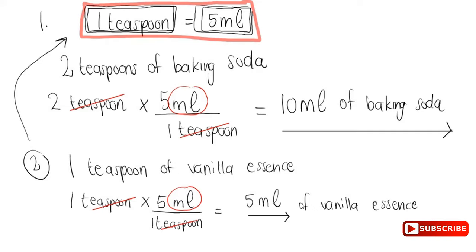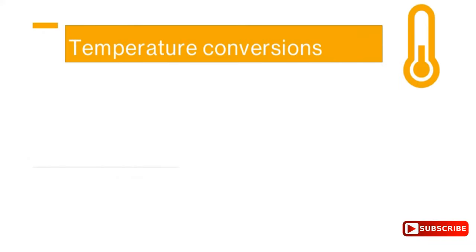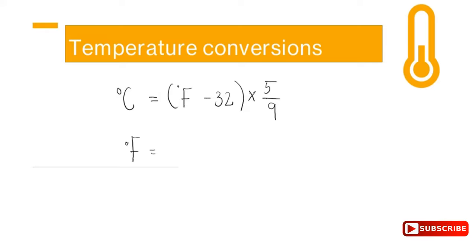Finally, let's look at temperature conversions. Usually the formula is given in the exam. To convert Celsius to Fahrenheit: F = (9/5 × C) + 32. To convert Fahrenheit to Celsius: C = (F − 32) × (5/9).